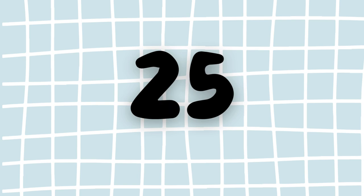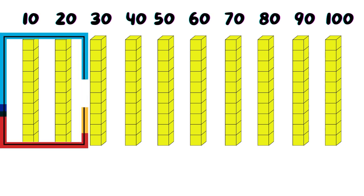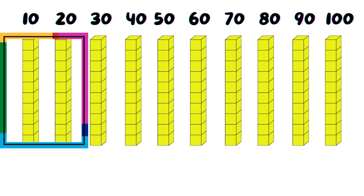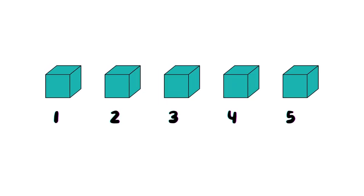How about 25? Who can tell me what the digit 2 represents in this number? It's in the tens place, so it represents 20. And what about the 5? That's in the ones place, so it represents 5. Very good.